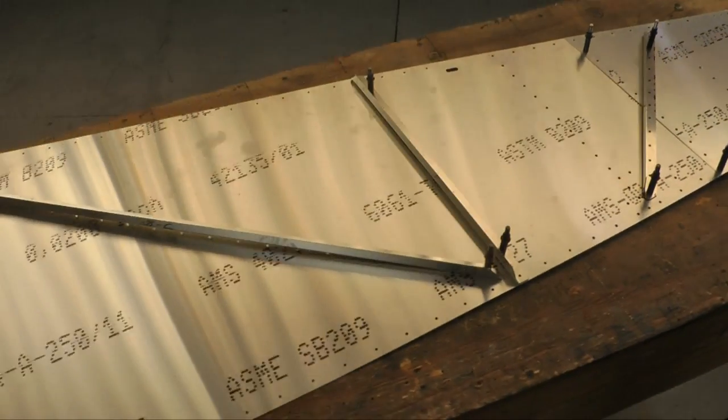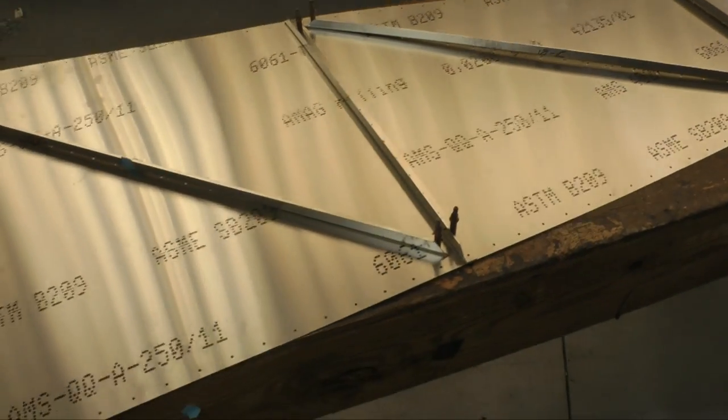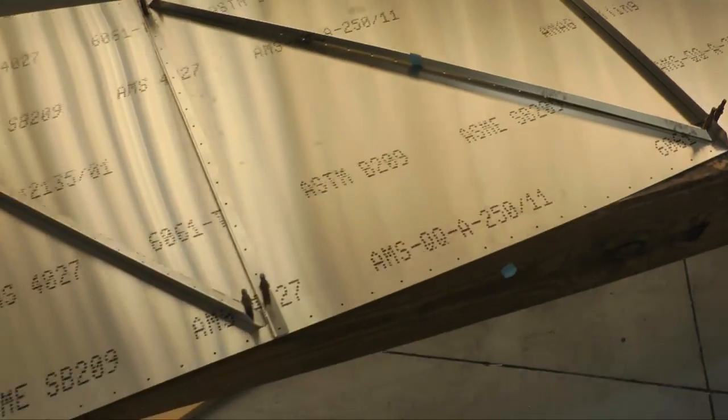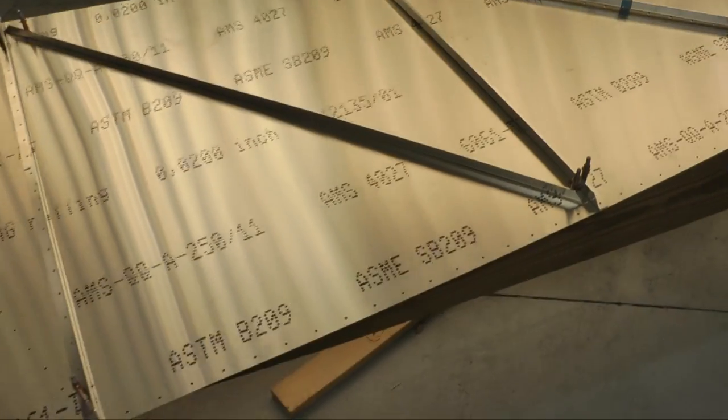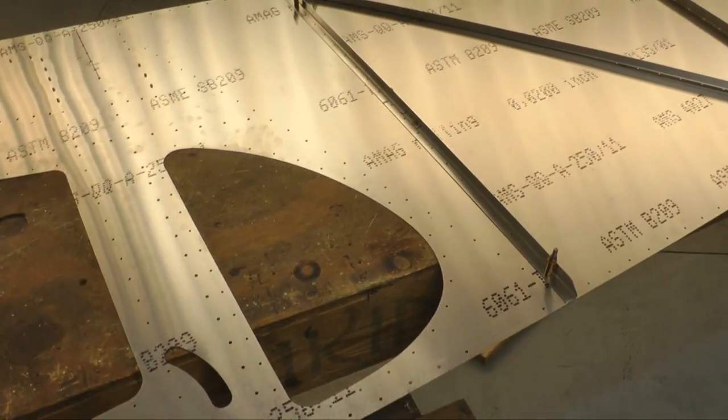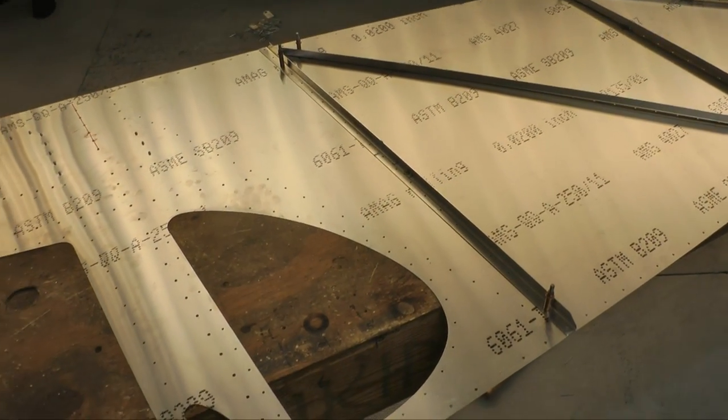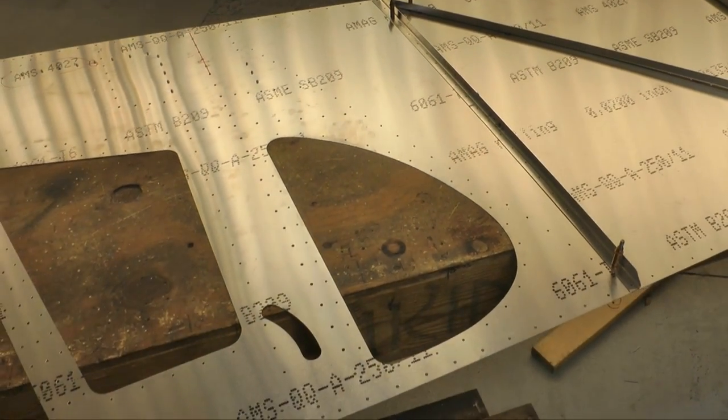You want to make sure you get the left versus the right correct, as they are, some of them mirror opposites of each other. So make sure you have the correct L angles for the left or the right skin. And that will be in your plans. So with just two Clecos in each L, we will now flip the skin over and continue Clecoing, and then we can rivet.